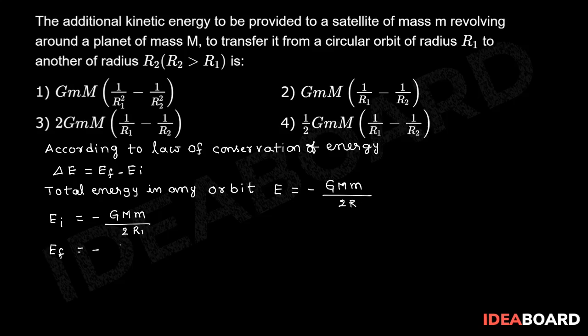Final energy is equal to minus GMm by 2R2. Therefore, delta E is equal to Ef minus Ei.